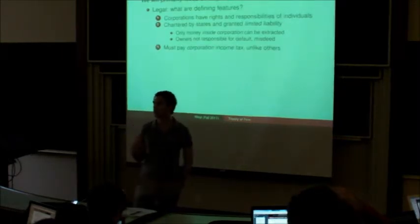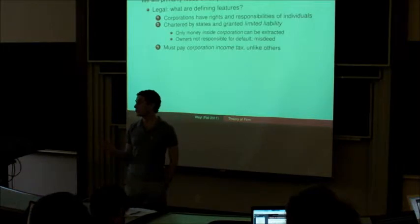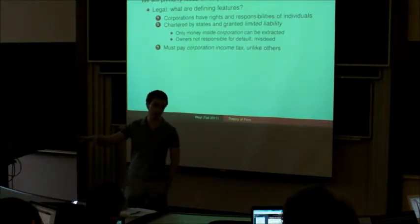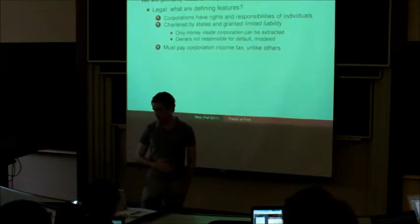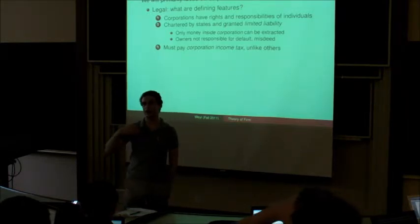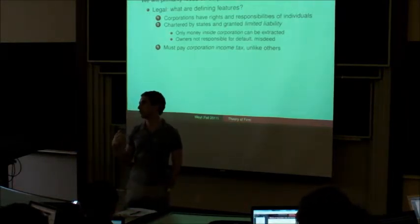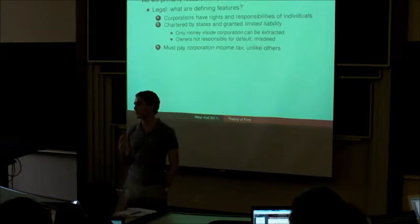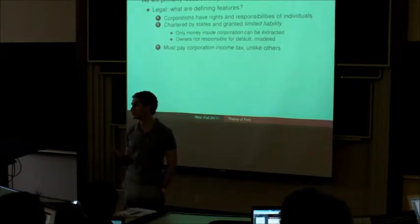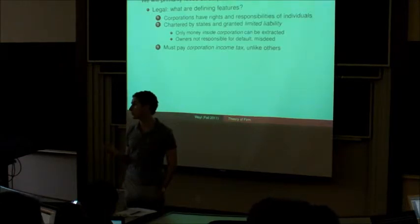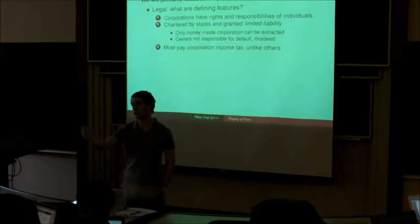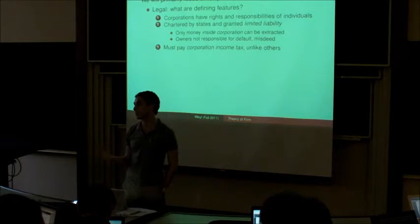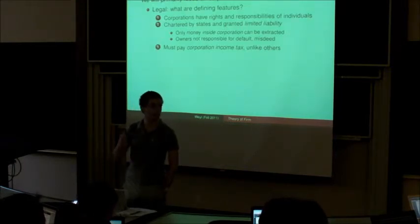If the company does bad things and gets sued, only the money inside the company can be held responsible for that. The owners have no responsibility for the misdeeds of the company. The cost of having the benefit of limited liability is that corporations have to pay a corporation income tax, which partnerships don't have to pay. They have to pay a special income tax as corporations, and then if they send something out as dividends or give money, they have to pay taxes again on that. Some people say corporations are double taxed, whereas if you own a business yourself, you just pay income tax on the money you've got.